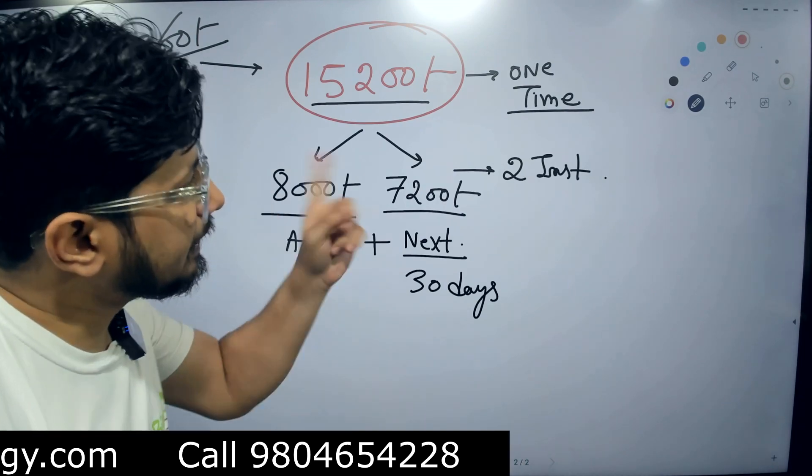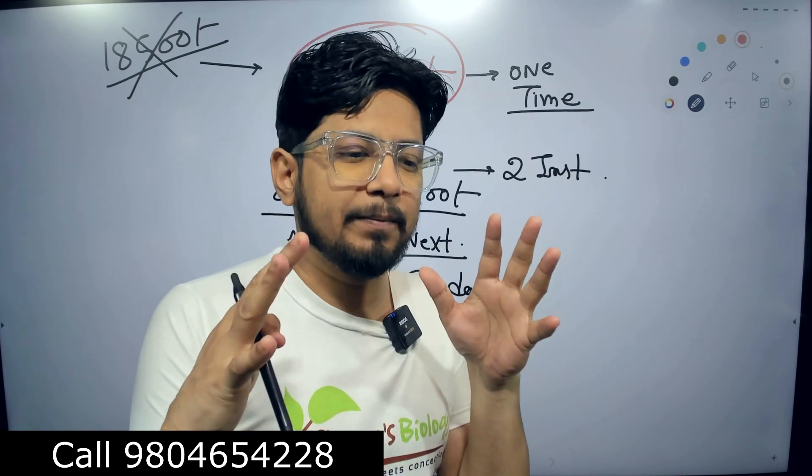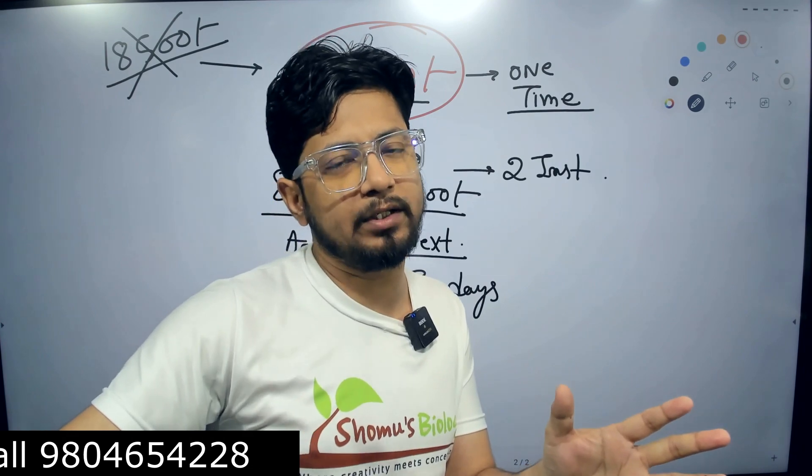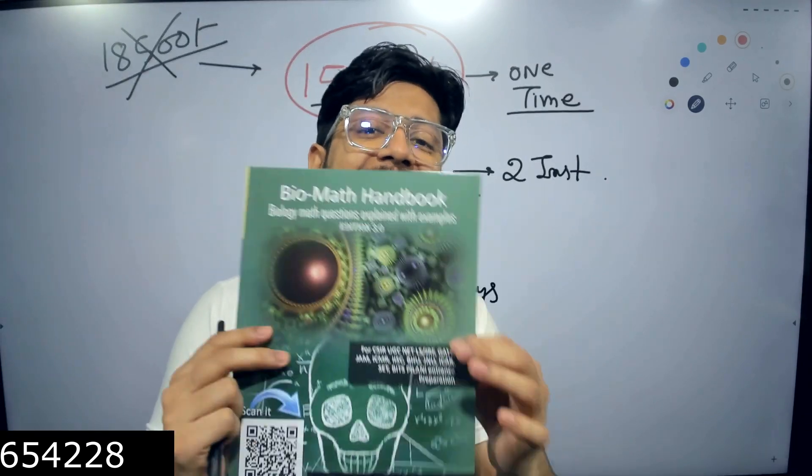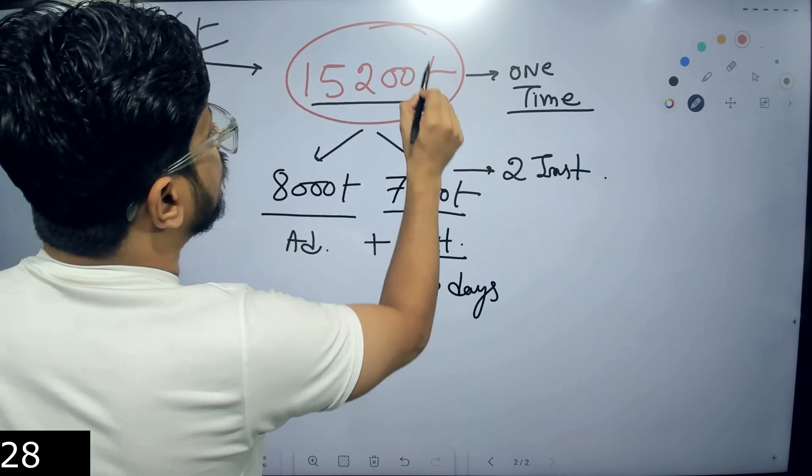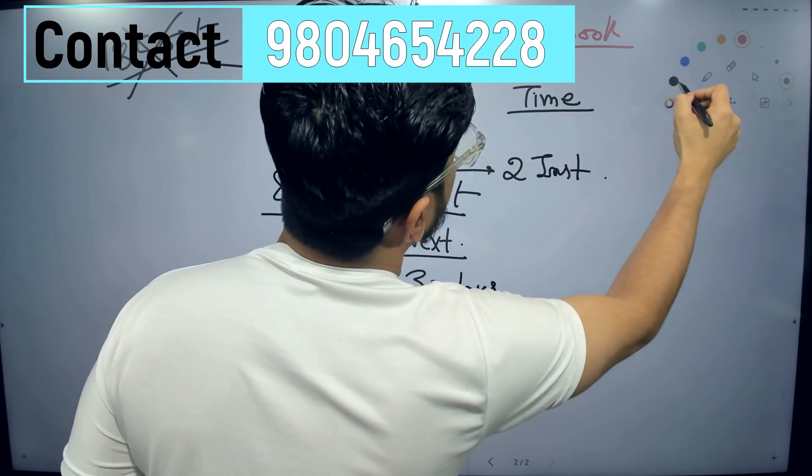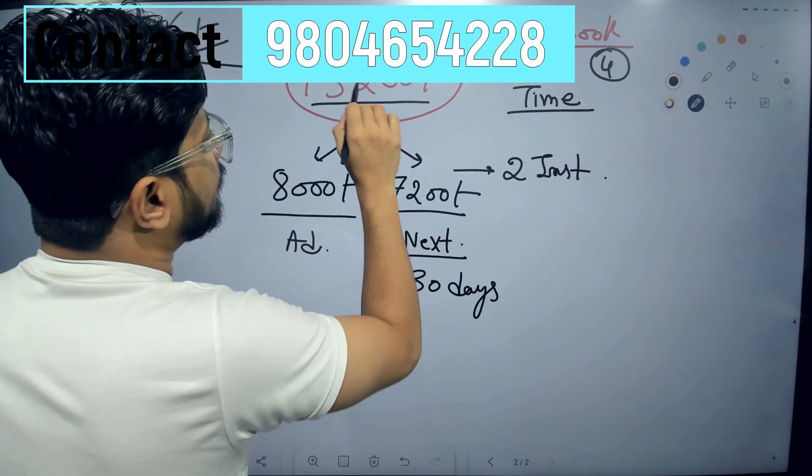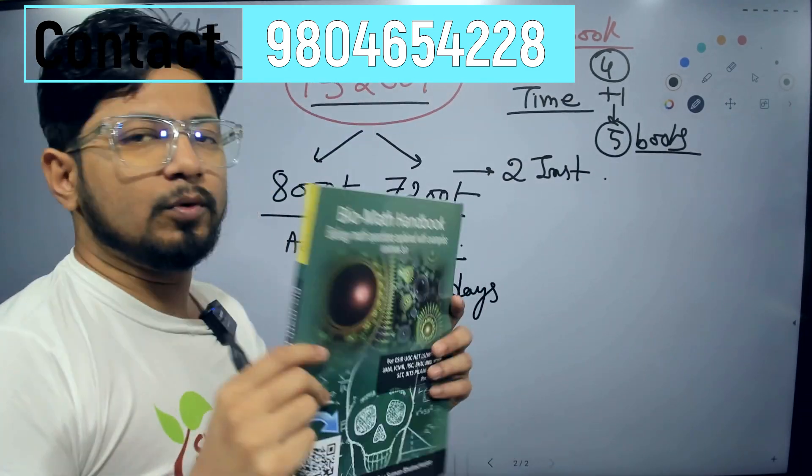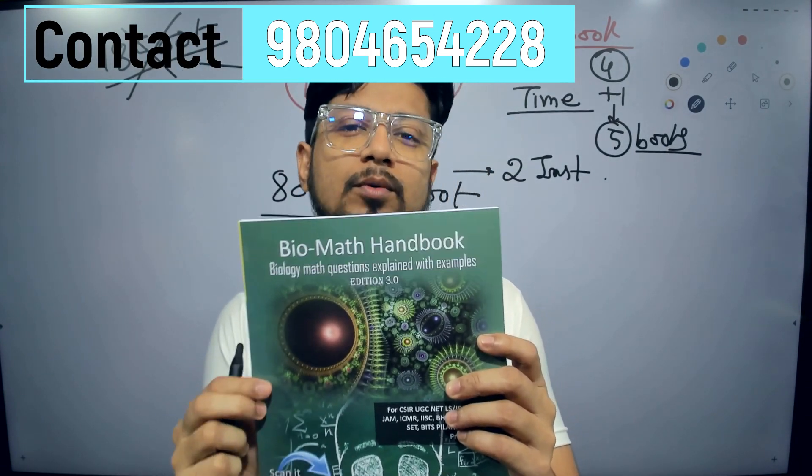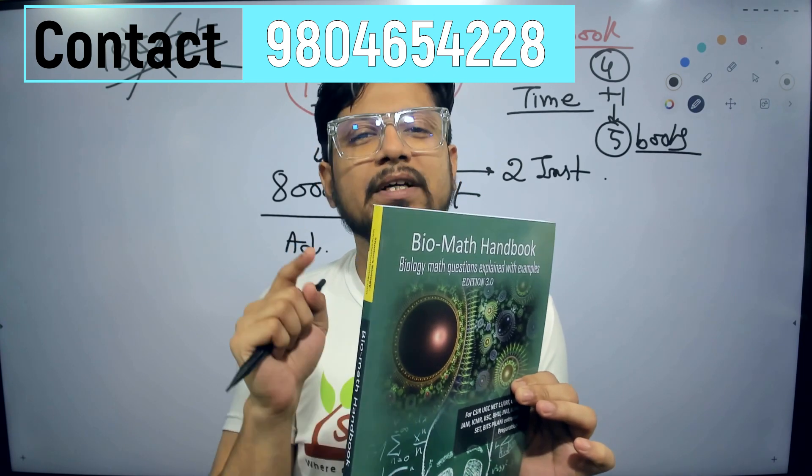But there is a difference in terms of payment terms as well. We encourage one-time payment because that fixes a student for six-month coaching and two years validity. For that loyalty we provide a loyalty benefit - an extra book to those who pay one-time fee of fifteen thousand two hundred. Normally we provide four books, but in this case if you pay fifteen thousand two hundred you get one extra book, total five books. This extra book - bio math handbook which is exclusive book from Shomu's Biology, not available in any other places. You can get this book which is going to be really handy solving the biology math problems.